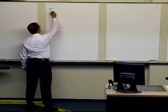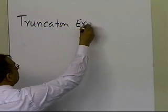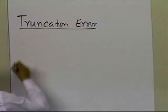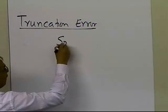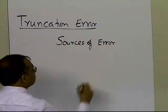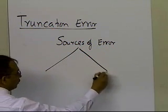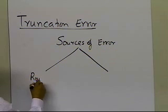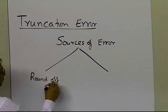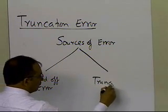In this segment, we're going to talk about truncation error. We have sources of error in numerical methods — not the errors created by writing the wrong program (logic or syntax), but the errors which are inherent when using numerical methods. One is called the round-off error, and the other one is called the truncation error.